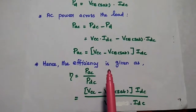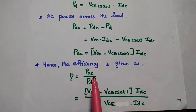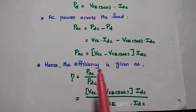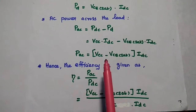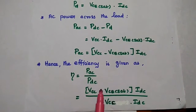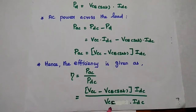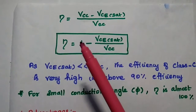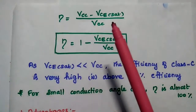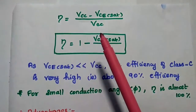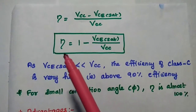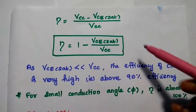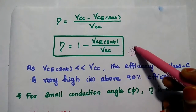As we know, efficiency is the ratio of AC output power to DC supply power. Substituting AC output power as IDC times (VCC minus VCE) and DC supply power as VCC times IDC, the IDC terms cancel. We get efficiency eta equal to (VCC minus VCE) divided by VCC. Dividing both terms by VCC, this simplifies to eta equal to 1 minus VCE divided by VCC. This is the formula for class C amplifier efficiency.